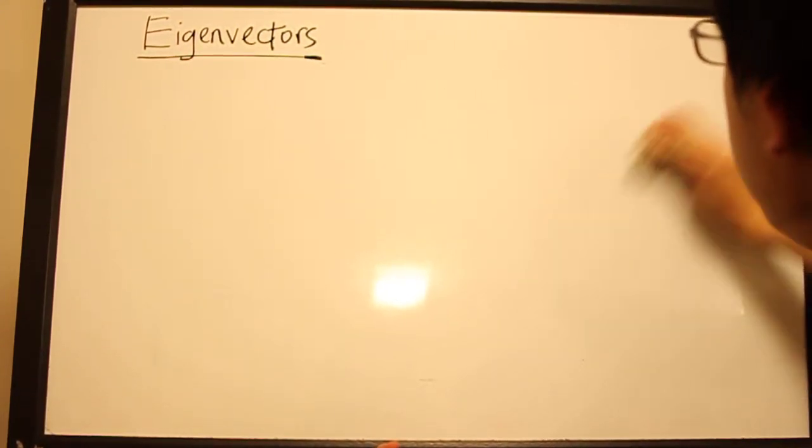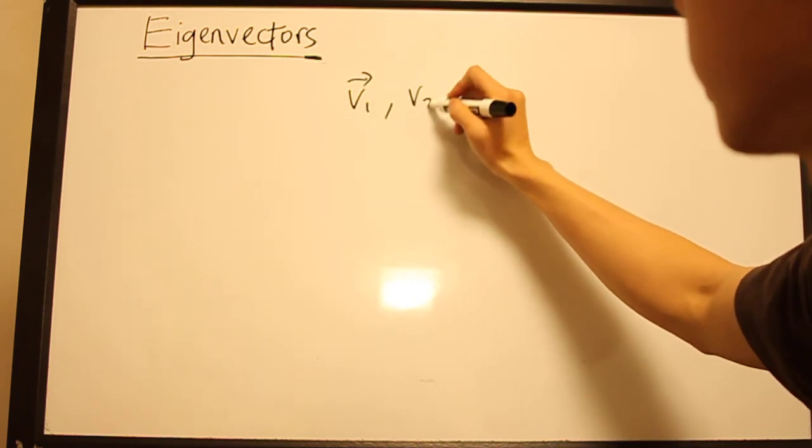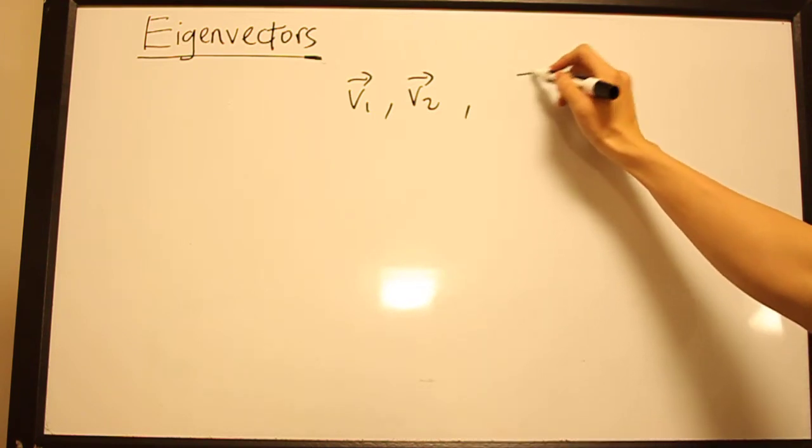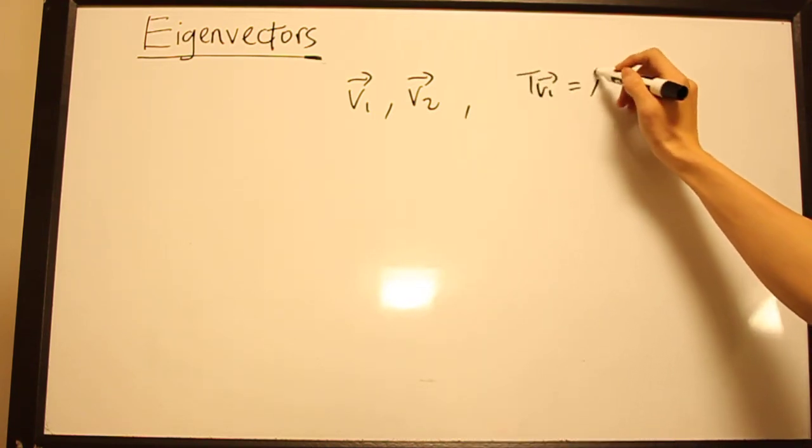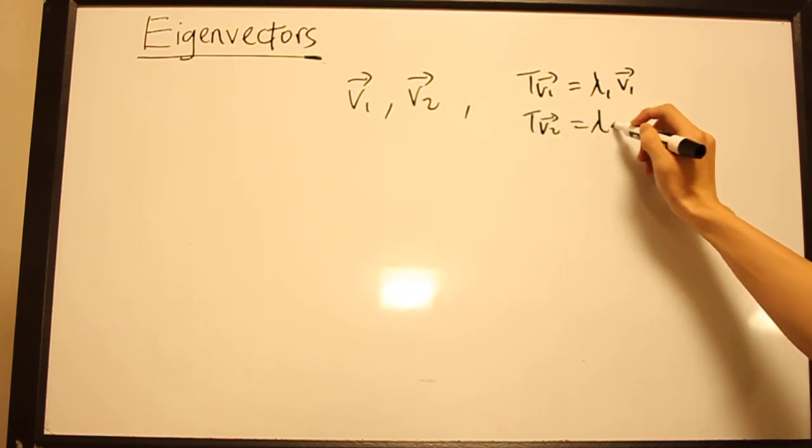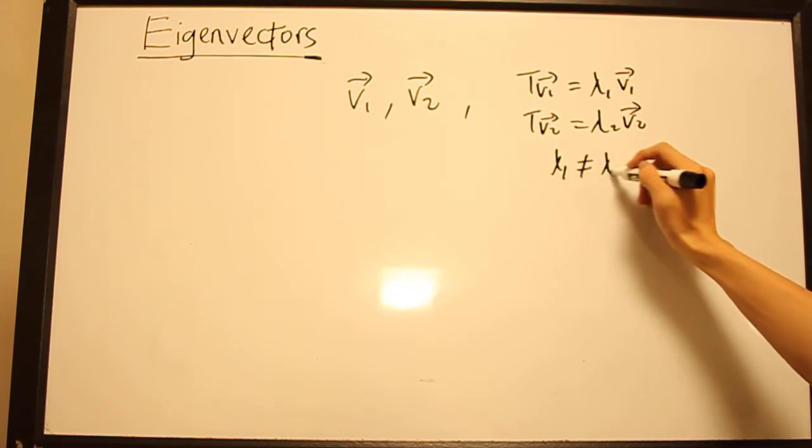A slightly less obvious concept that you might not have thought of is that if I have an eigenvector V₁ and another eigenvector V₂ of T with different eigenvalues, so we have T(V₁) equals λ₁V₁ and T(V₂) equals λ₂V₂ where λ₁ does not equal λ₂,